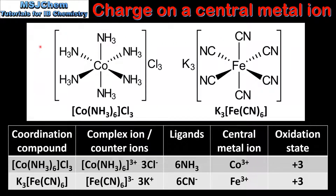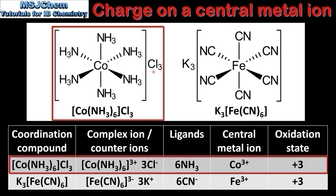The last examples we look at are coordination compounds. To determine the charge on the complex ion we need to consider the charges of the counter ions. The example on the left has 3 chloride ions which are negatively charged, so the charge on the complex ion is 3+. The central metal ion is a cobalt ion and the ligands are 6 ammonia molecules. Ammonia molecules are neutral, therefore the charge on the central metal ion is the same as the charge on the complex ion — the cobalt 3+ ion with an oxidation state of +3.